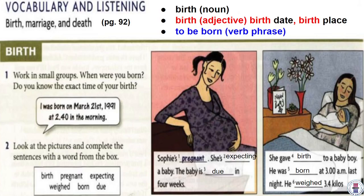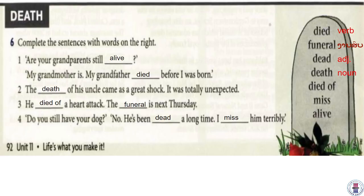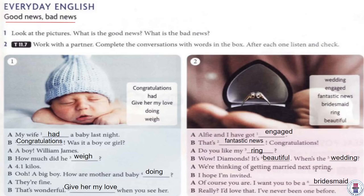I want to move on to page 92. Last week we talked about this vocabulary — birth, engagement, marriage, and death. Some of this stuff is good news and some is bad news. Good news are things you want to hear, and bad news are things you don't want to hear, but throughout your lifetime there will be some bad news and hopefully a lot of good news. They want you to put these vocabulary words into fill-in-the-blanks, and these are some phrases and expressions you would use in each situation.